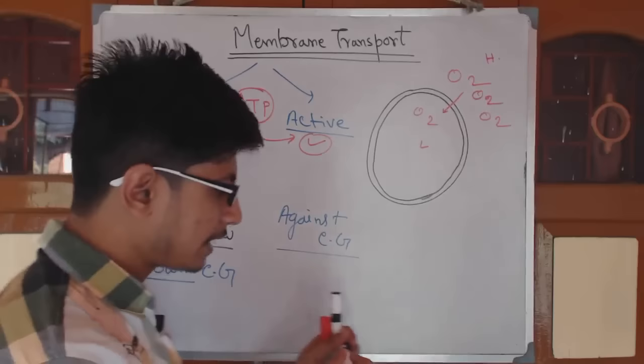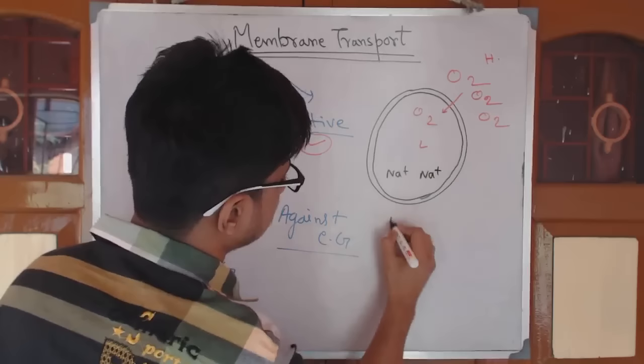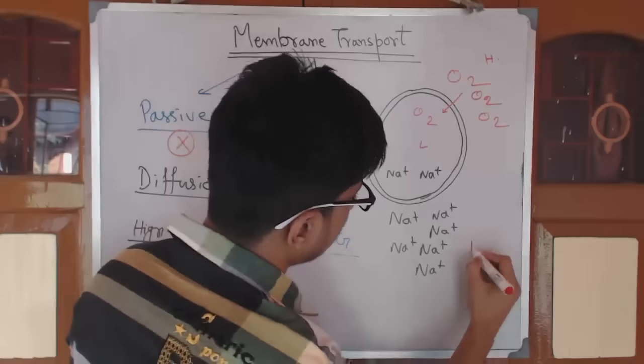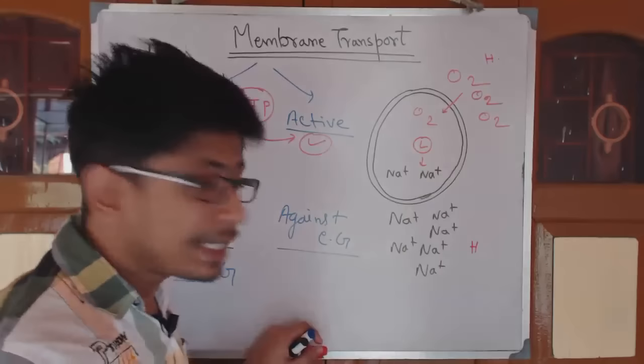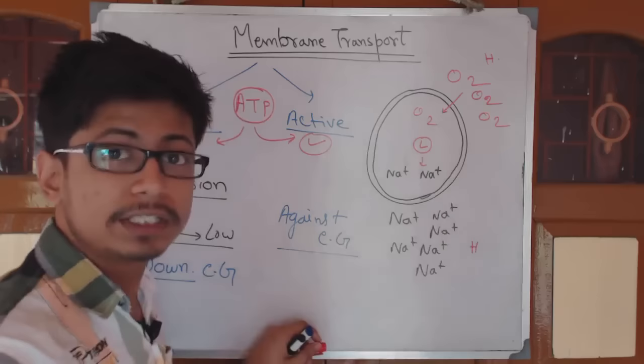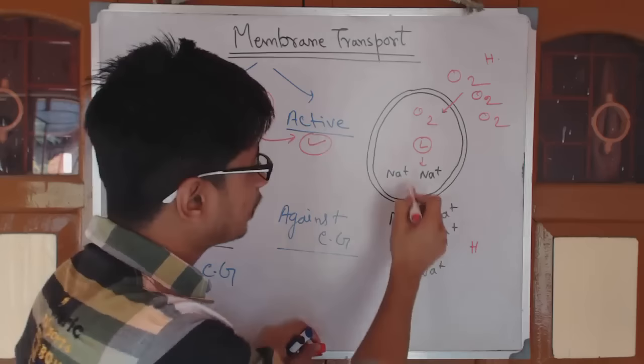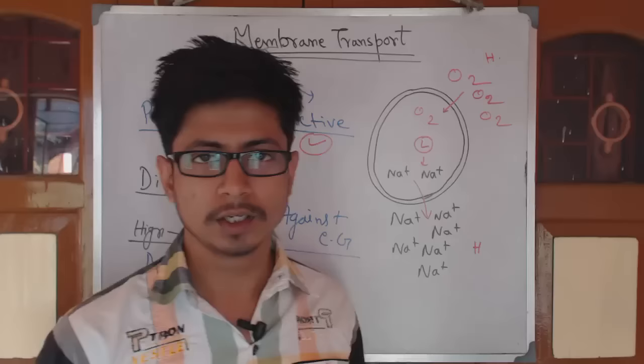For example, if sodium ion concentration is very low inside the cell and very high outside, sodium would naturally flow from outside to inside down the concentration gradient. But if we want intracellular sodium to move to the outside, that requires energy because it is moving against the concentration gradient — that is active transport.